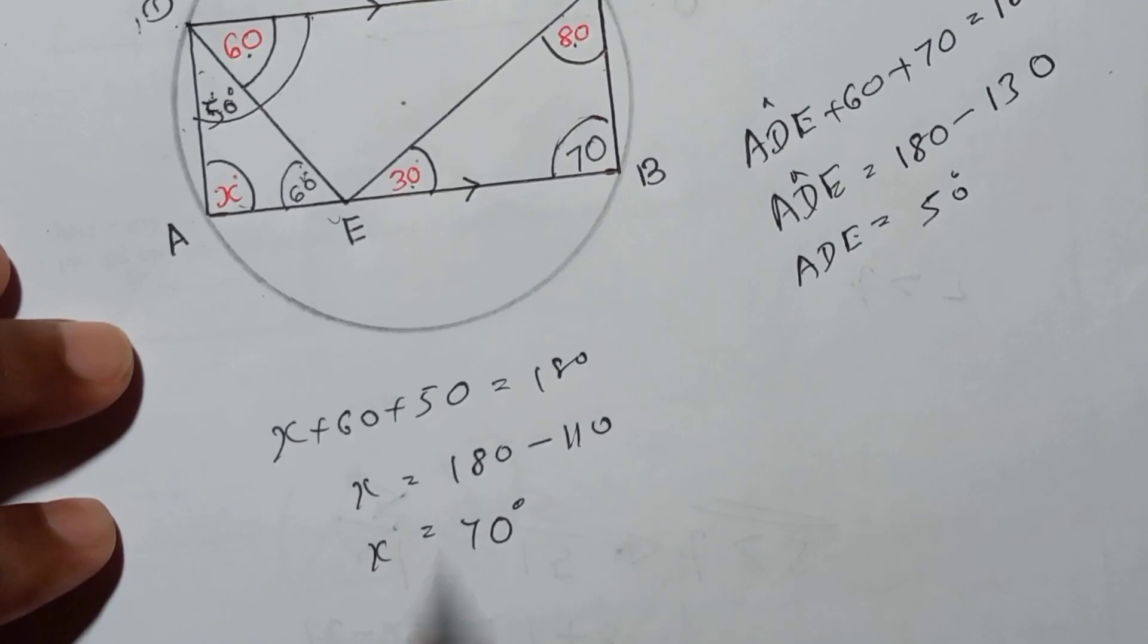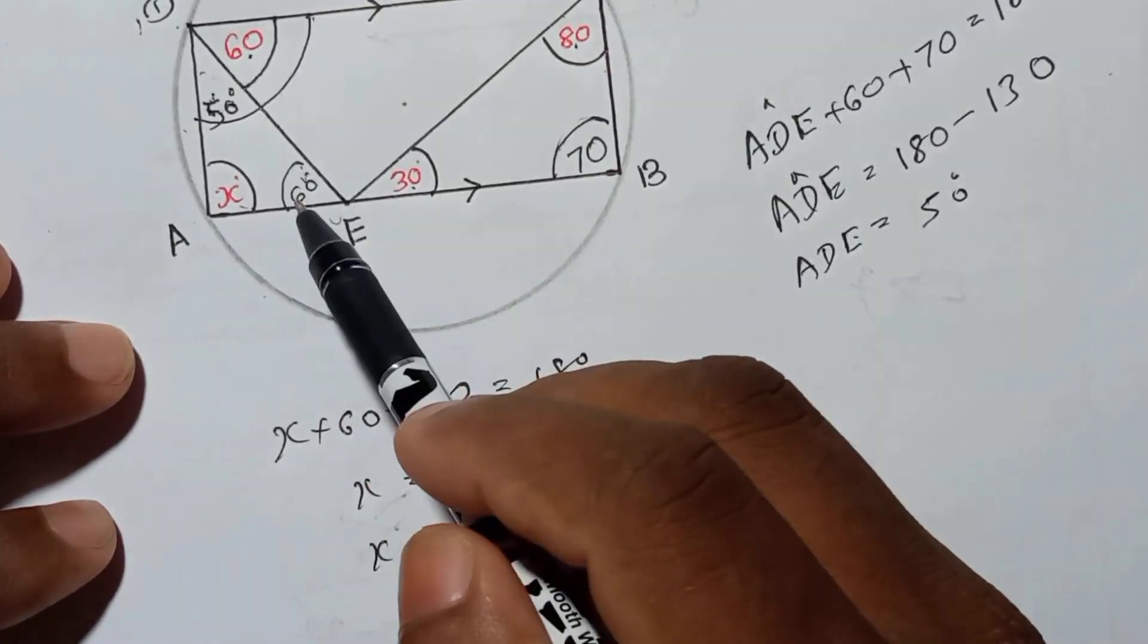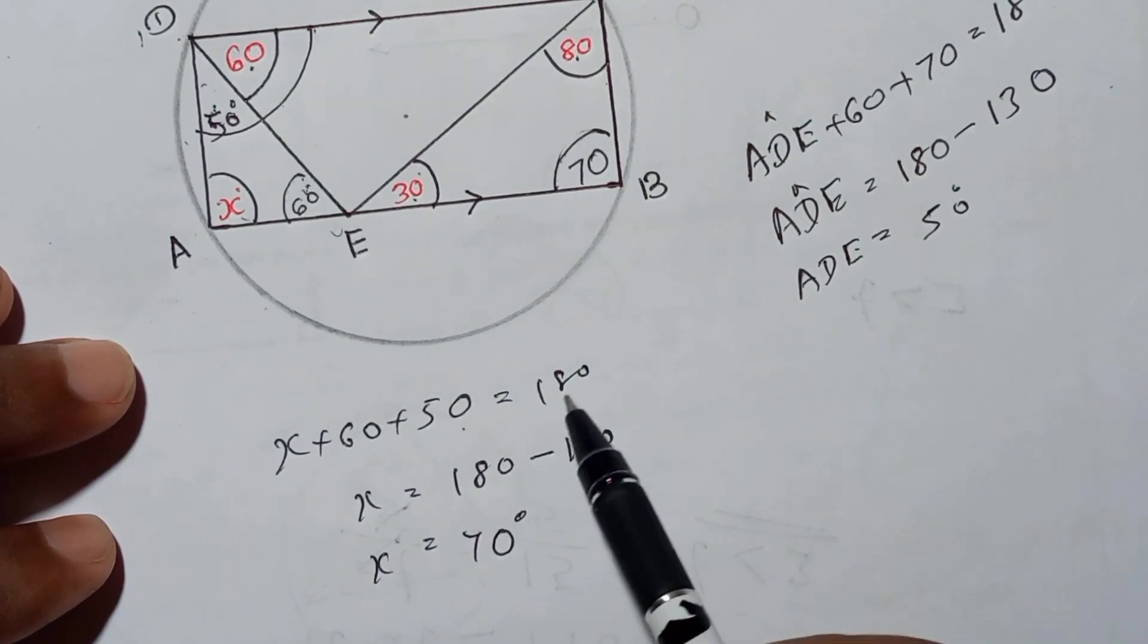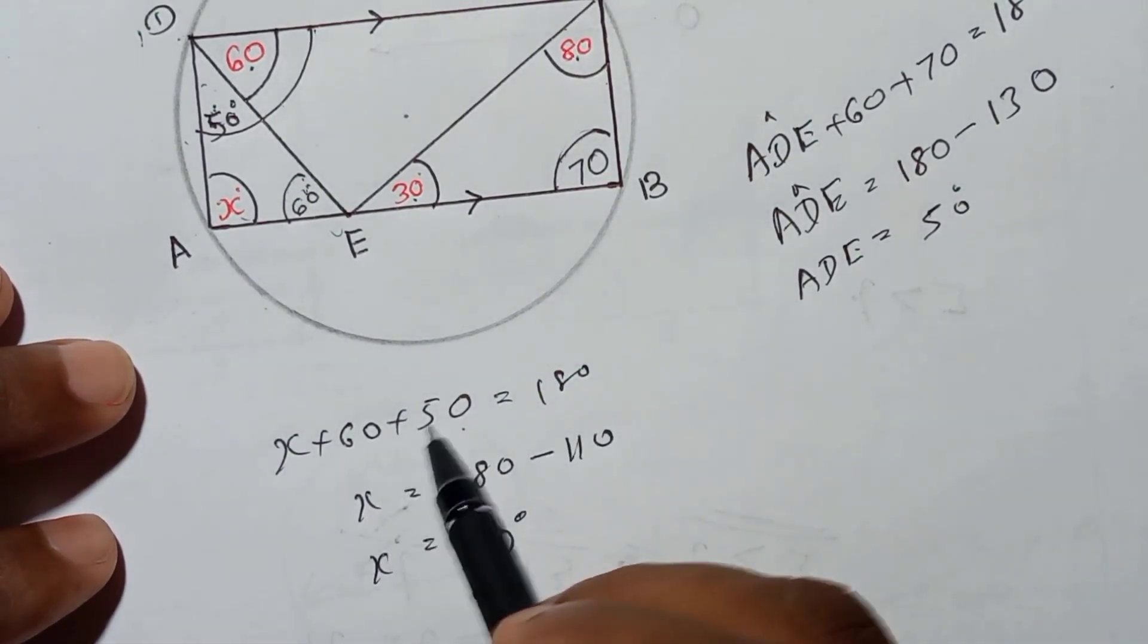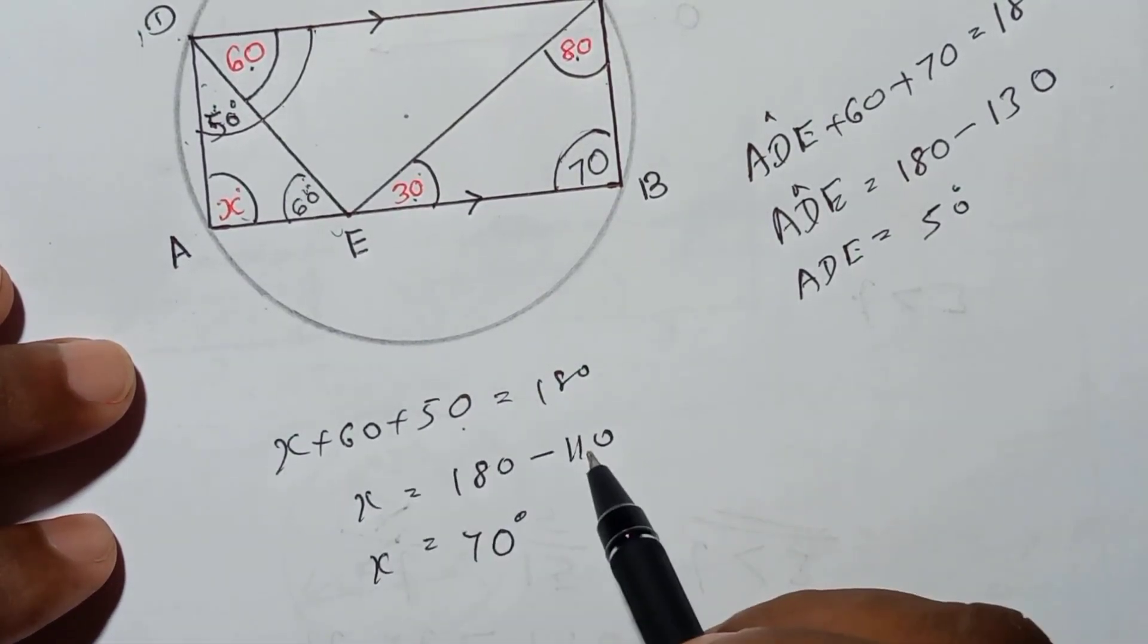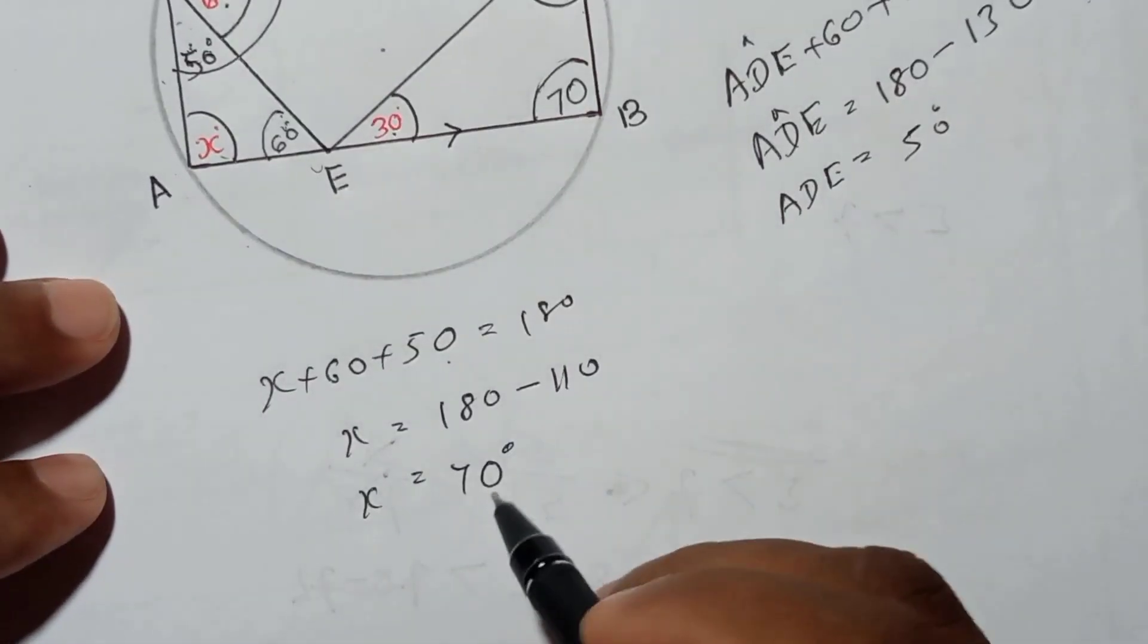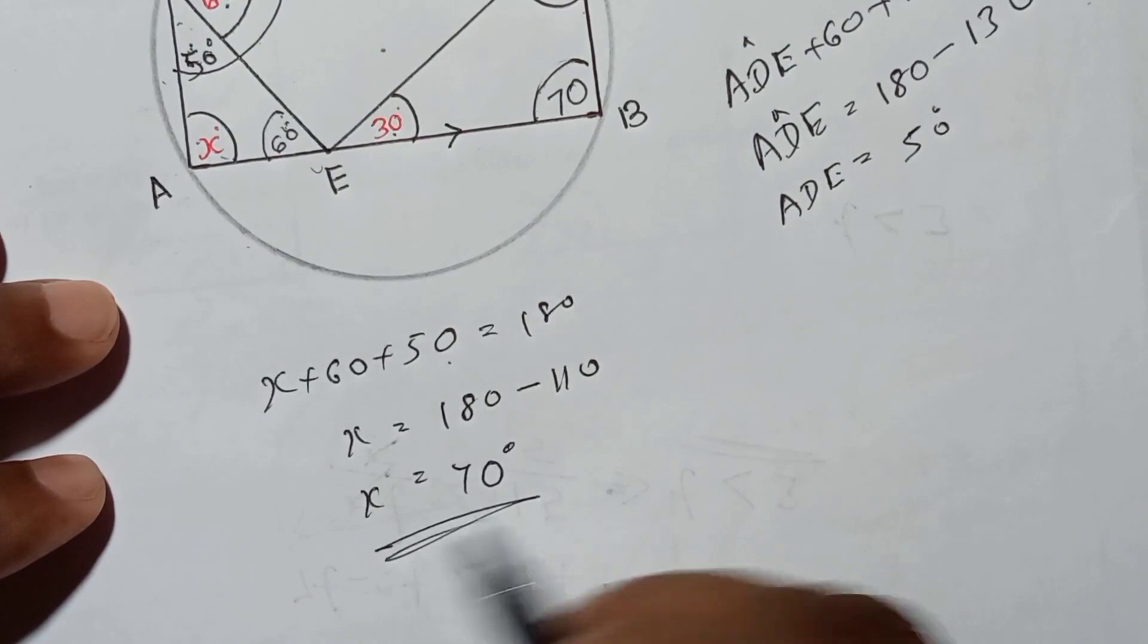Okay, I will tell again. Now you can write 50 plus 60 plus x like this way equals 180. Then when you add these two together, from that, 180 subtract 110, then it will be 70. So x value is 70 degrees.